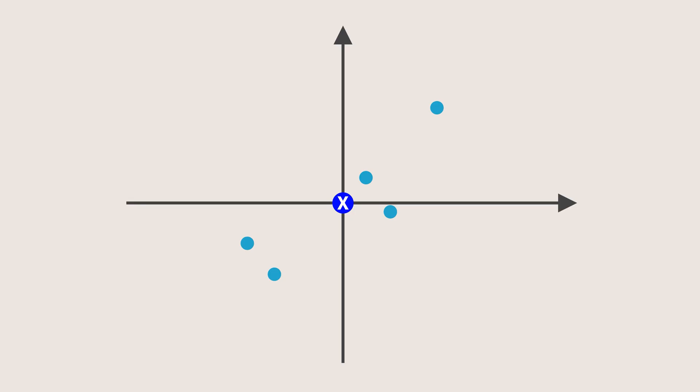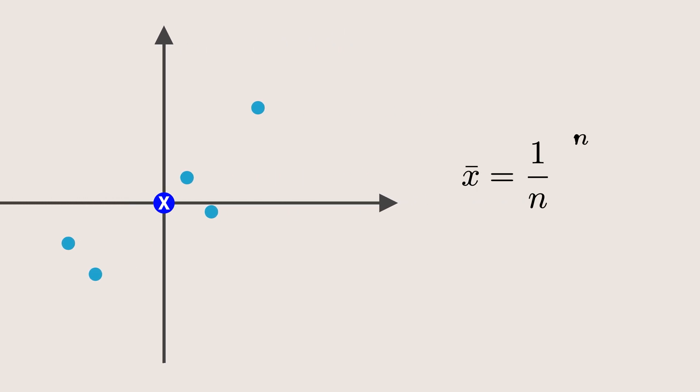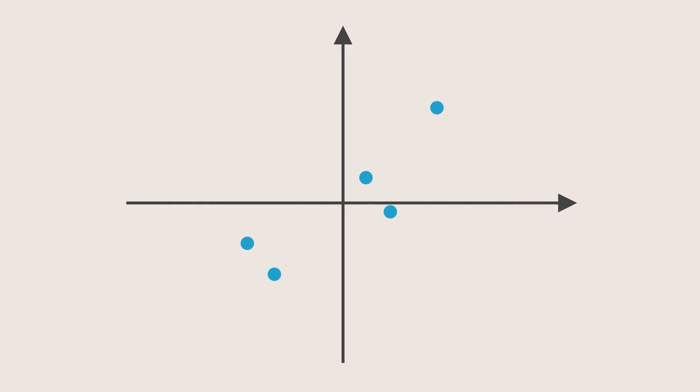This step is crucial because PCA is all about finding the direction of maximum variance. If the data is not centered, the mean will act like a bias. We will see this in a moment. Mathematically, this step is done by finding the mean of the dataset and then subtracting that mean from every data point in the dataset. Now let's focus on a single data point for clarity.